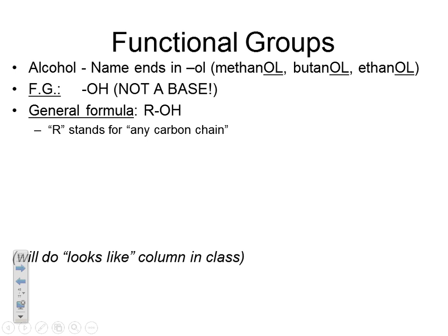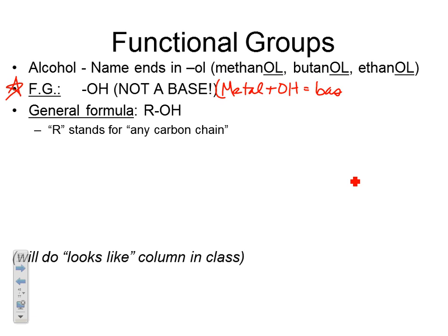A new functional group: alcohol. The functional group for an alcohol is OH. This is really important — this is not a base. A base needs a metal plus hydroxide. But if we have a carbon bonded to this OH — which we no longer call hydroxide, it's called hydroxyl — then we have an alcohol. This is not a base; it's a different type of compound.